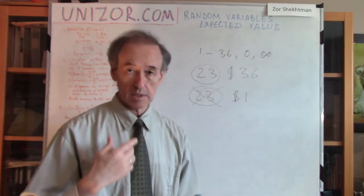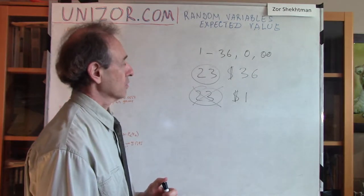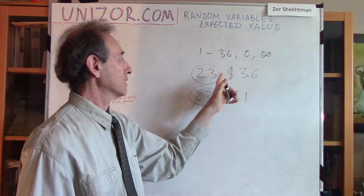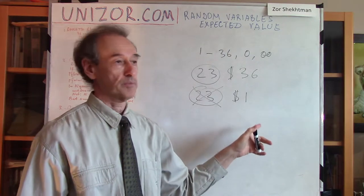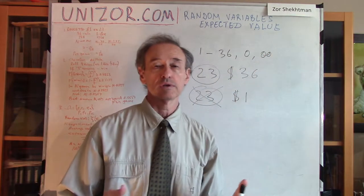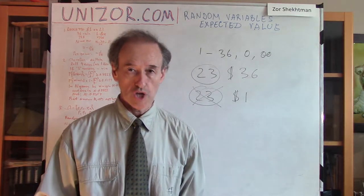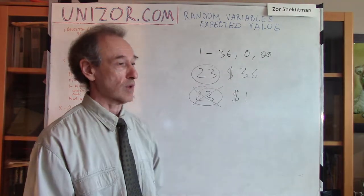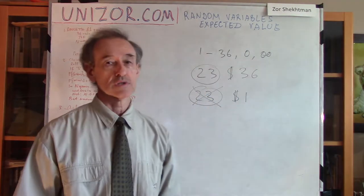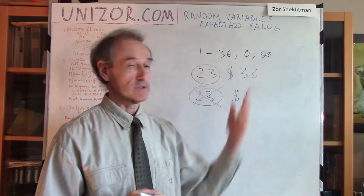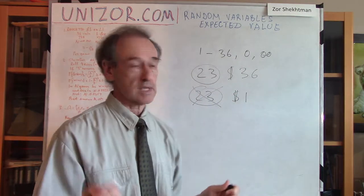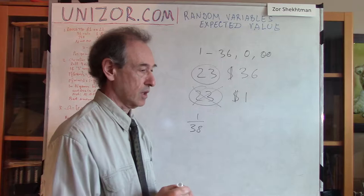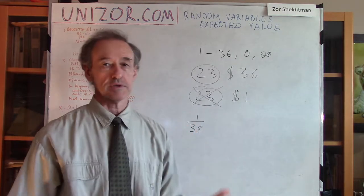The random experiment is basically to play the game. The results of the random experiment are 38 different results — one of them is successful and the rest are not. Considering these are 38 results with presumably equal chances to occur, because the wheel is made correctly and the ball is round, all these partitions have an equal chance to occur. Which means, since there are 38 partitions, we have to assign the probability of 1/38 to each result.